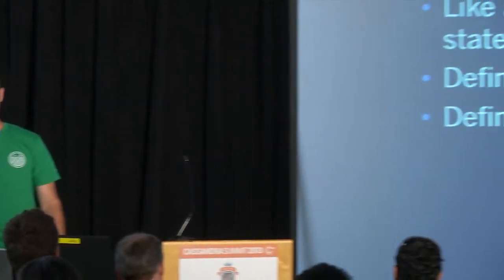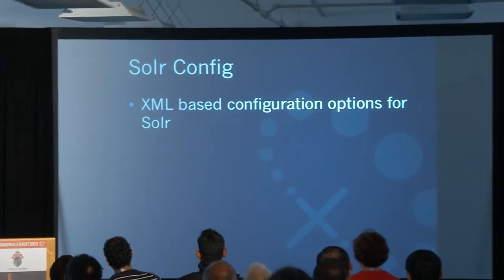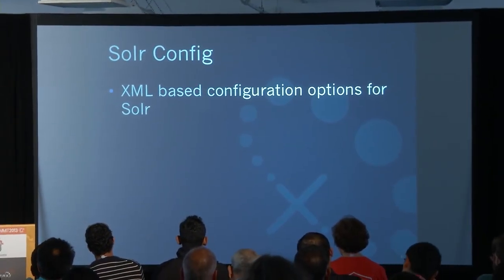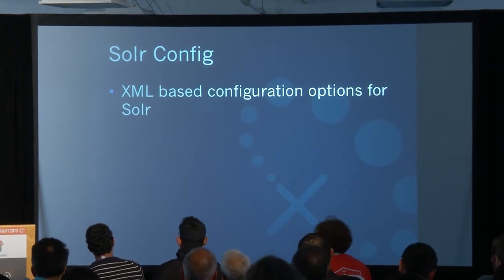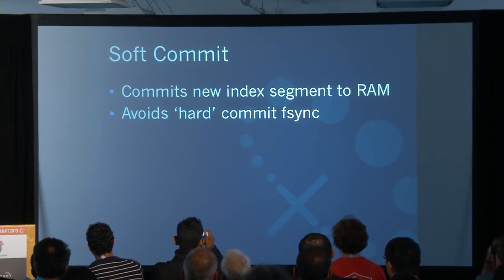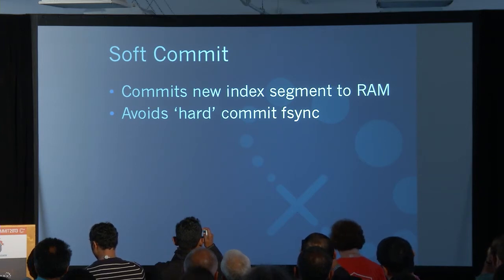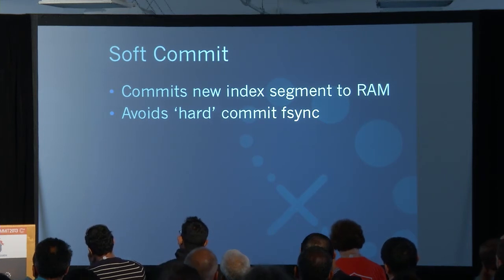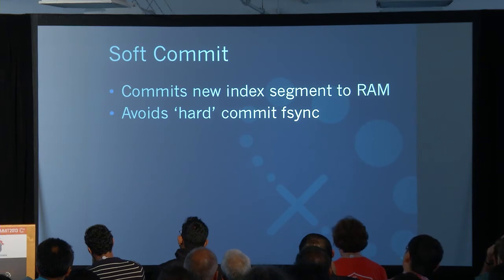One thing I like to go over is: if you've got an existing application in SQL — Oracle or something like that — how do you convert that to Solr? There aren't really good guides for that, so we're going over some basic SQL queries and how those look in Solr. You always start with the Solr config, which is an XML file with a bunch of options. There are soft commit times — soft commit basically commits an index into RAM first, then later it goes to disk.